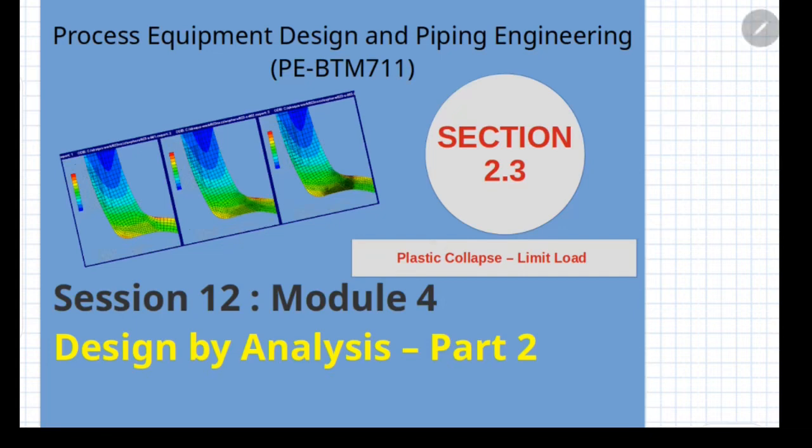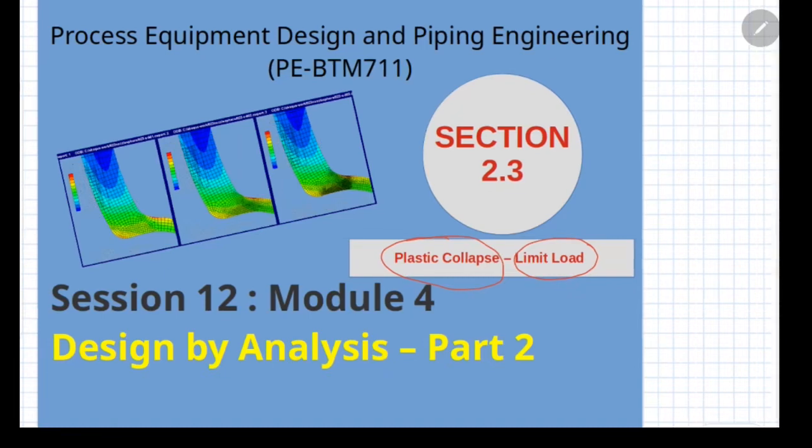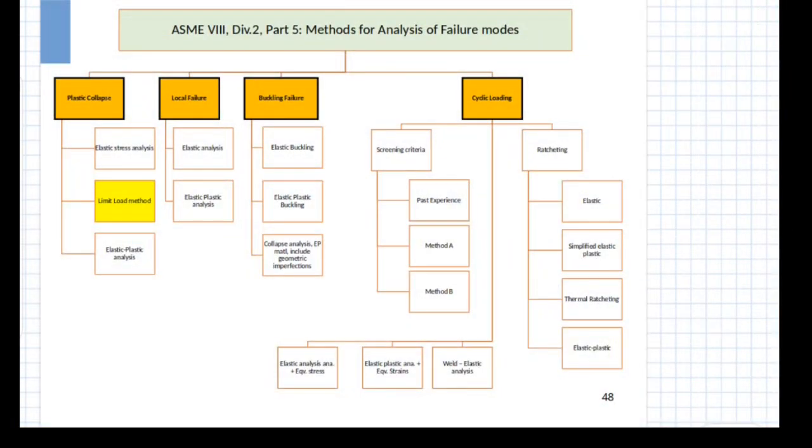In this section we will be covering the plastic collapse check, but we will be considering another alternative way of doing plastic collapse check using limit load. Just to recap, the plastic collapse can be done by one of three ways. We have already seen the elastic analysis way. Now we are looking at the limit load method.